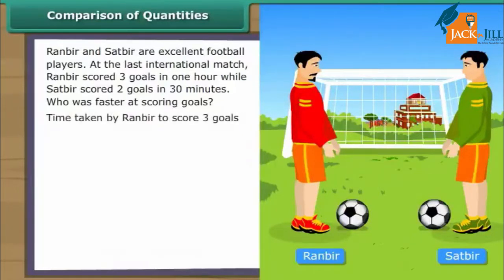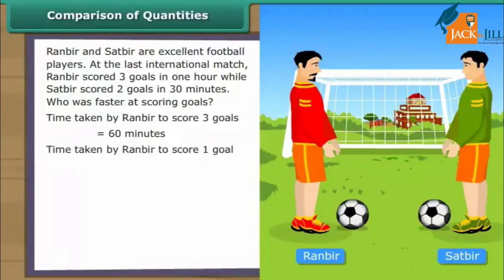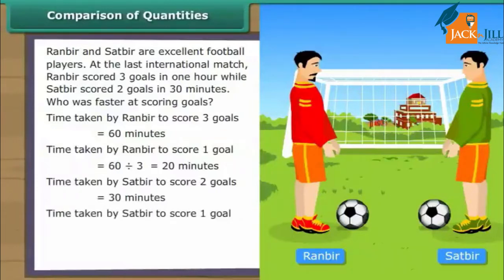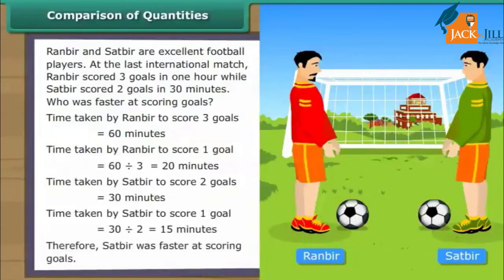Time taken by Runbeer to score 3 goals is 60 minutes. Time taken by Runbeer to score 1 goal is 60 divided by 3, which equals 20 minutes. Time taken by Satbir to score 2 goals is 30 minutes. Time taken by Satbir to score 1 goal is 30/2, which equals 15 minutes. Therefore, Satbir was fast at scoring goals.